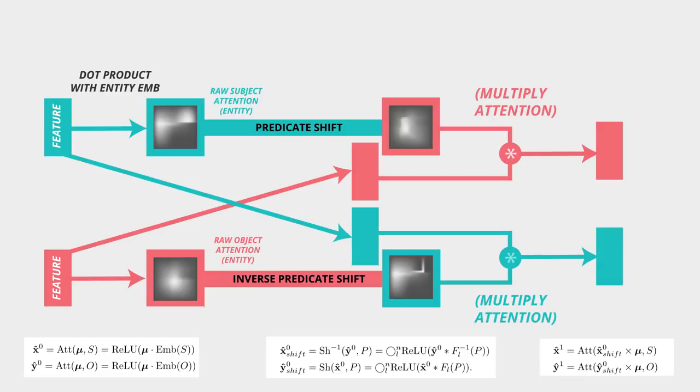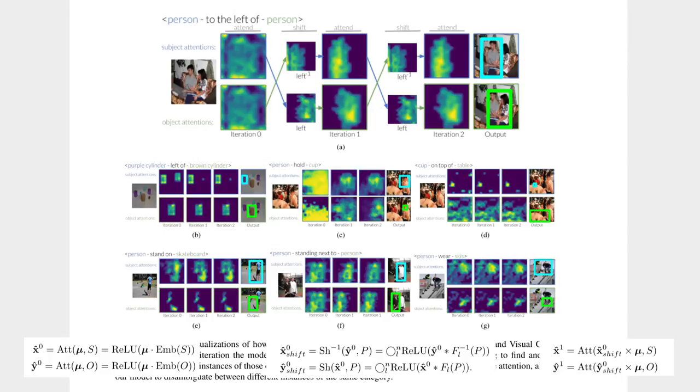Now I multiply this new subject attention obtained from the object with my original feature map from the entity. And that's how the message passing takes place. That's how the predicate based shift operations help in updating the initial attention. We keep cascading this again and again to improve our localization.